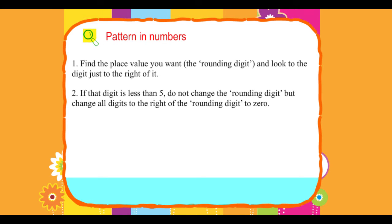2. If that digit is less than 5, do not change the 'rounding digit' but change all digits to the right of the 'rounding digit' to zero.